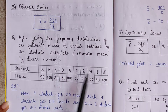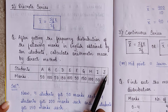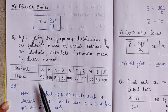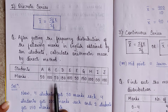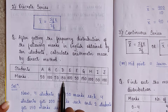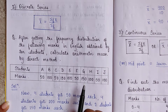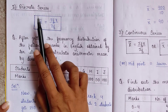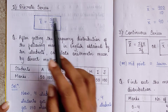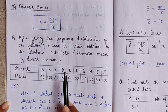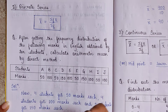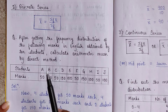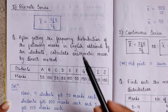The 10 students — A through J — have marks: 50, 10, 50, 150, 100, 50, 150, 100, and so on. In discrete series there is frequency, unlike individual series which has only individual data. In discrete series there is repetition — for example, 50 appears multiple times — so we first create a frequency table.